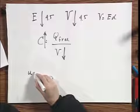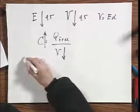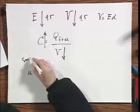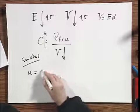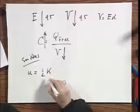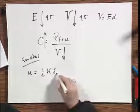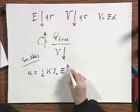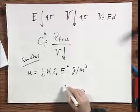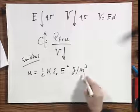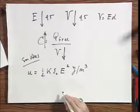The little u, which is energy density, how many joules per cubic meter, equals one half times the dielectric constant times epsilon zero times E squared. This would be in joules per cubic meter.